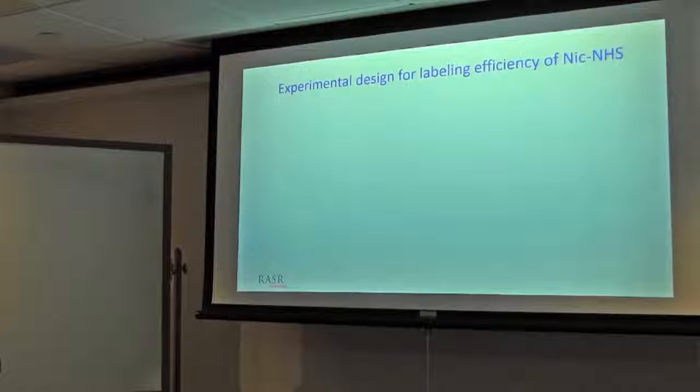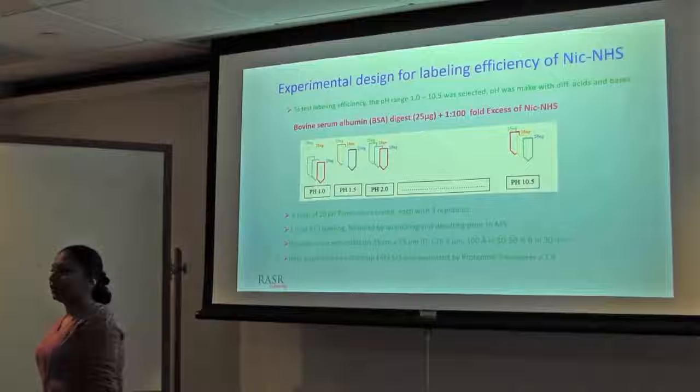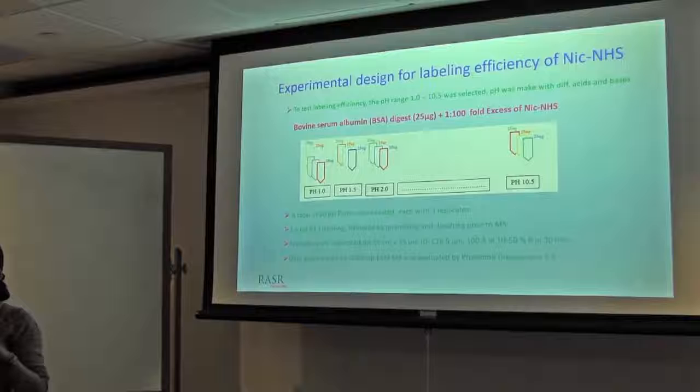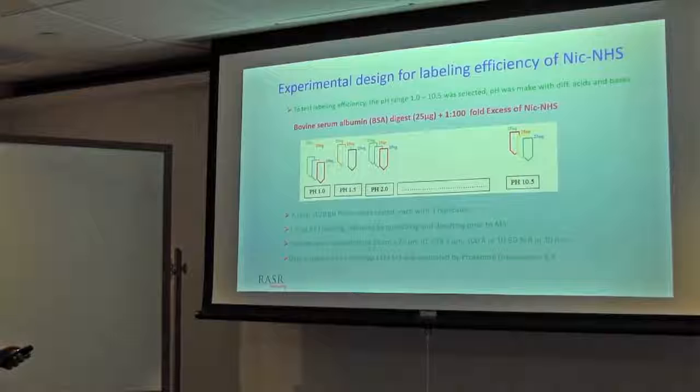Then the next question was, is this labeling efficient or not? Meaning, if I am having 100 peptides, how many of the peptides I can label with this? Almost the same experiment I have performed. However, this time I used different acids and bases to make the pH. Why? Because we wanted to see that maybe due to different acids, we can get better ionization or a stable pH that can keep our N-terminal deprotonated all the time during the reaction.